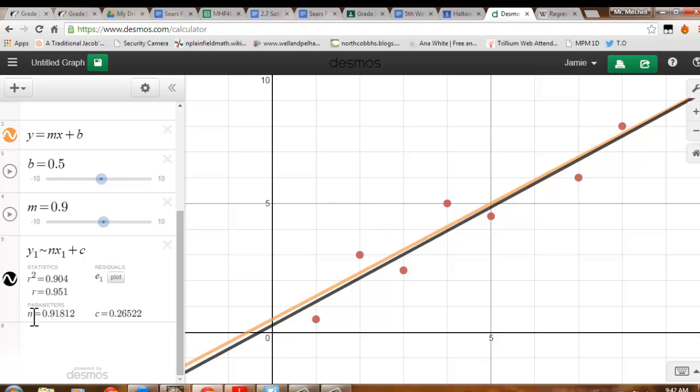My parameters n equals 0.91 with some more decimal places, c is equal to 0.265. These are pretty close to the values that I guessed, and these would be the values of the slope and the y-intercept.